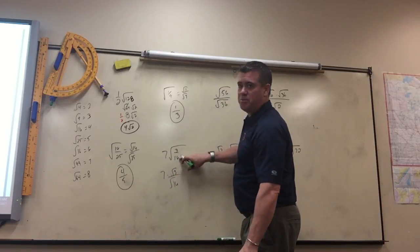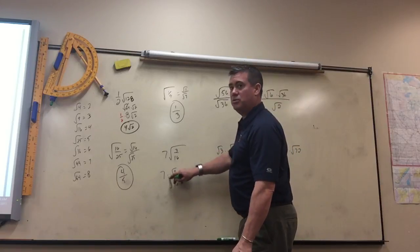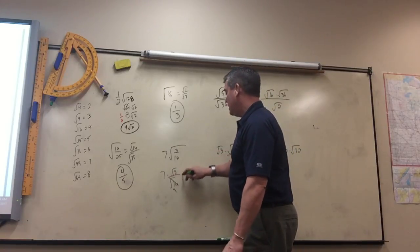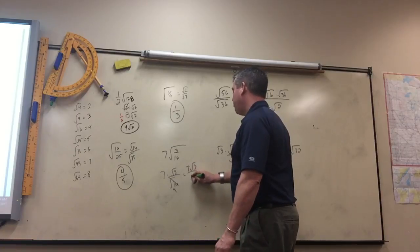So 3 sixteenths will not reduce, but we really wouldn't want to. Because this number is a perfect square. That turns to 4.